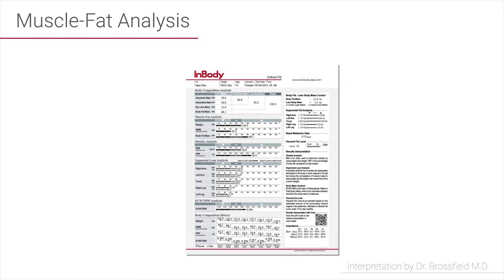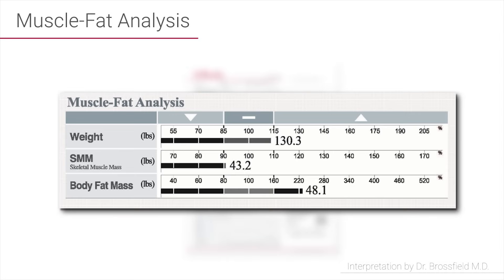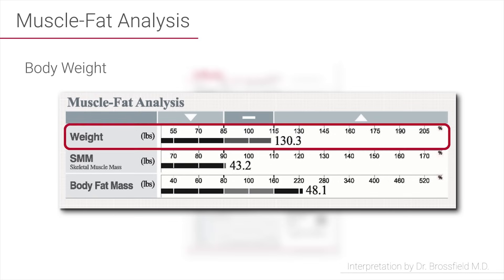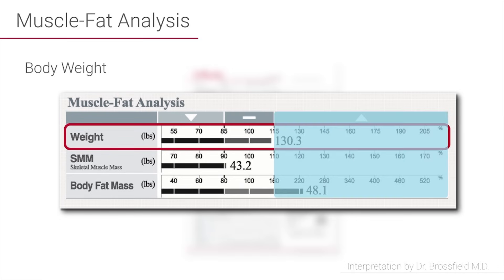The second box down is the muscle-fat analysis. This section helps you know whether or not the amounts of fat and muscle that you have in your body are in a normal range for your height and your gender. If you look at the first line where it has your body weight, you can tell by how this graph line moves over to the right and whether it stops in the below normal, the normal, or the above normal range whether you're on track with your total weight.